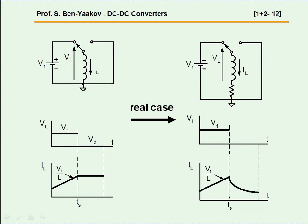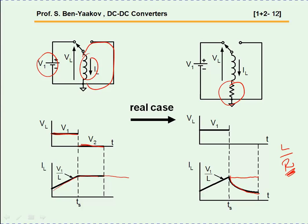If we connect the inductor to V1, the current will rise, and then suppose we connect it to a short circuit. The voltage of a short is zero, so the rate of rise is zero — the current will circulate with a constant value. In practical cases, if there is a parasitic resistance in the inductor wires, the current will drop in an exponential fashion with a time constant of L over R. If R is very small, the time constant is essentially infinite.